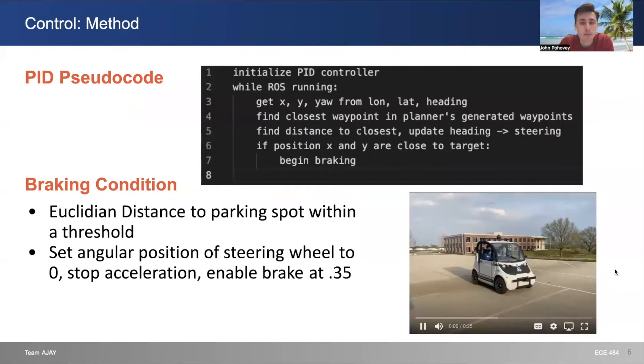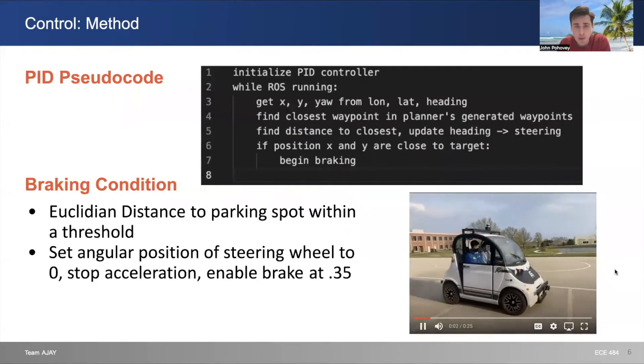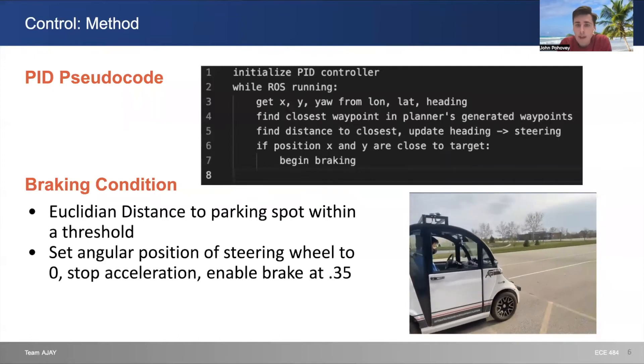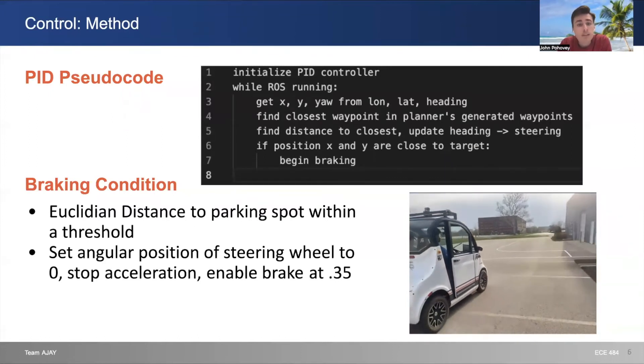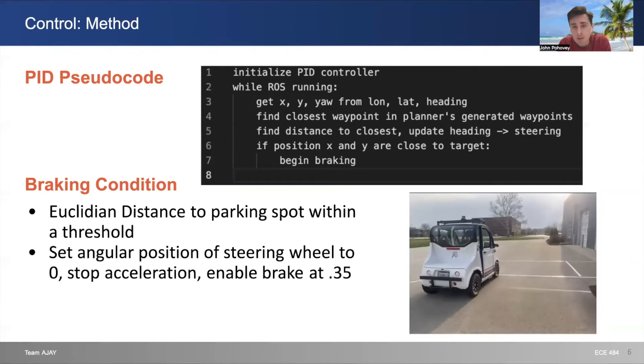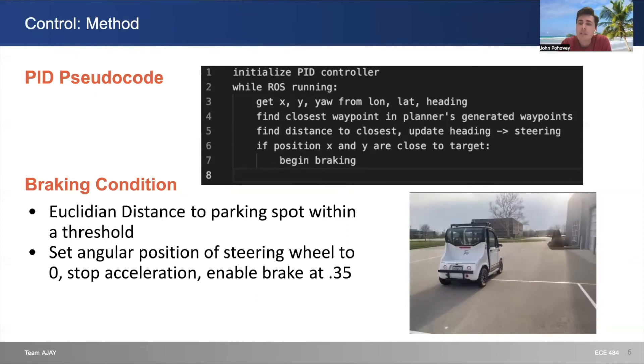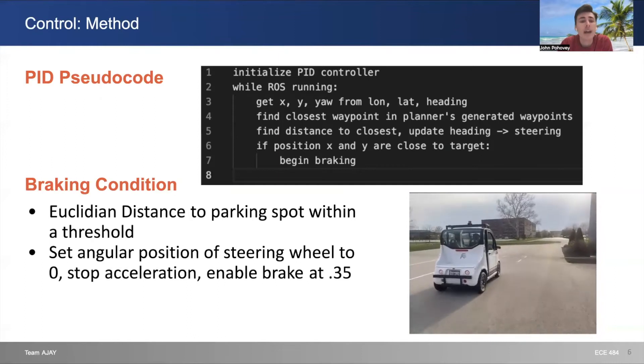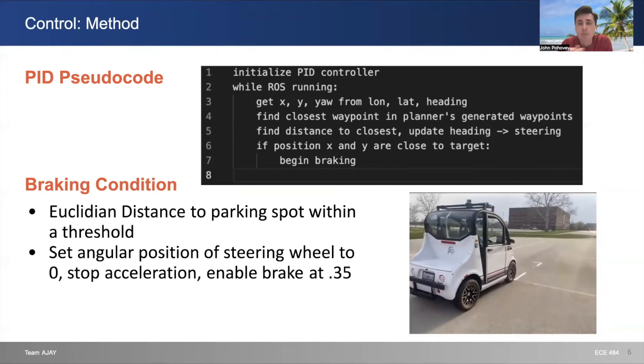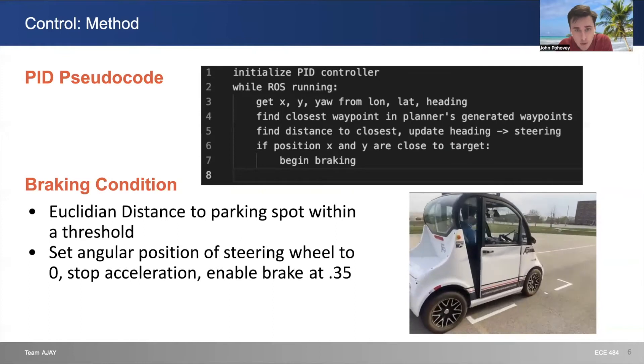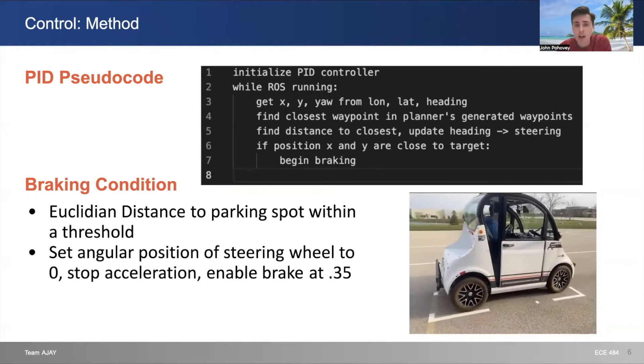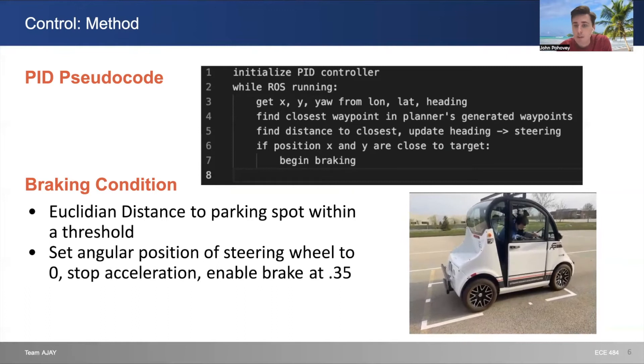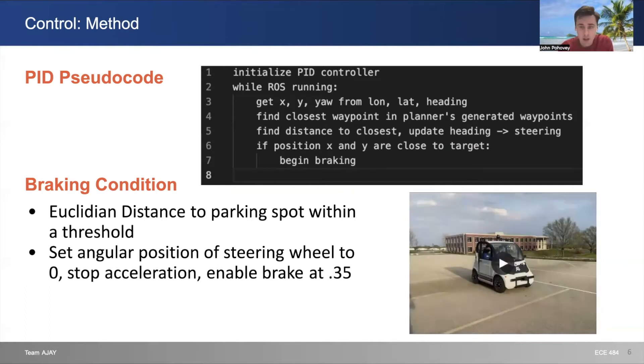Another aspect of our pipeline design was our control unit. Our controller would get the X, Y, and yaw of the vehicle from the latitude and heading, and based on the waypoints generated by the planner, it would find the closest one to where the car was. Once it had this closest point, it would get the distance, update the heading, and update the steering accordingly. As you can see in this video, once the X and Y got close to the parking spot, it began to brake and stop.